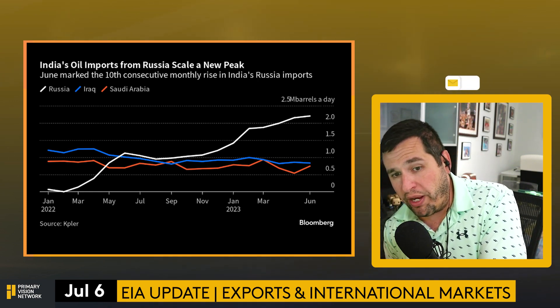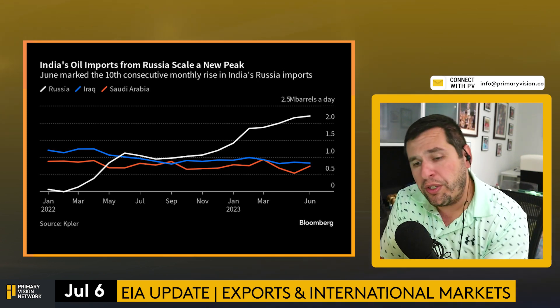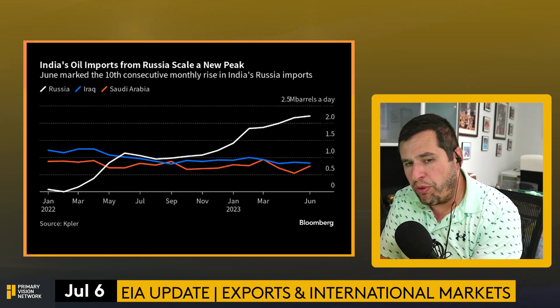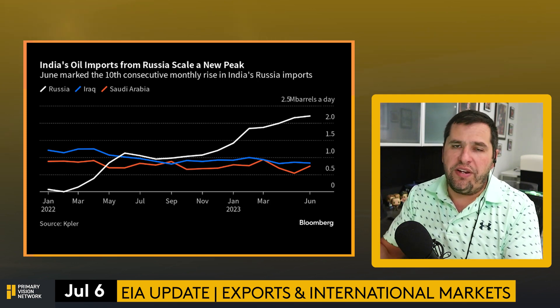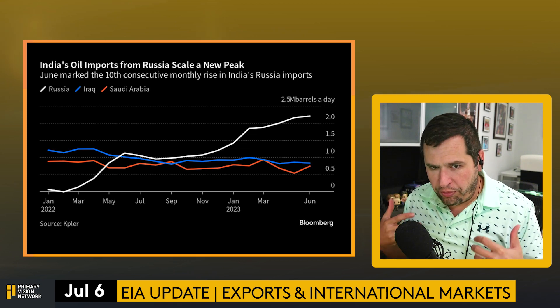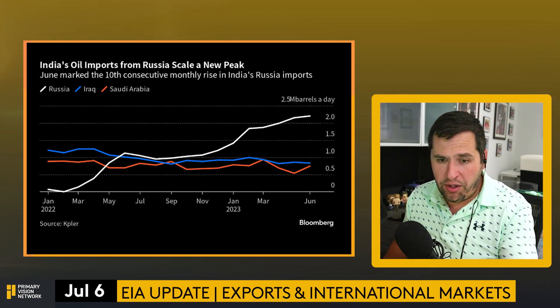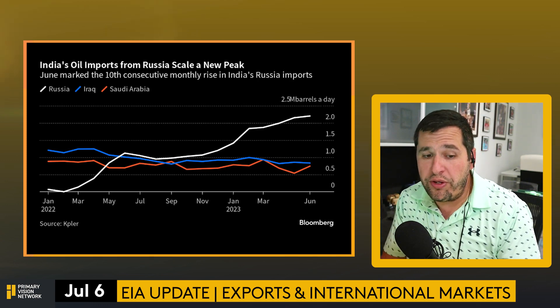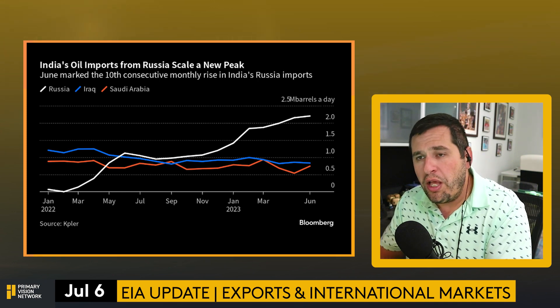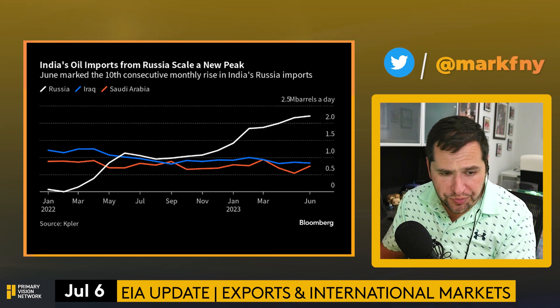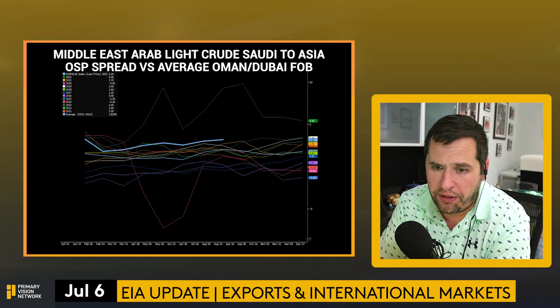India will continue importing more Russian crude. By doing that, they're leaving Saudi and Iraqi crude on the water. Instead of letting it sit, Saudi is leaving it in the ground, while Iraq — which has seen some of this come down — actually benefits the US because those Iraqi barrels, especially Basra Heavy and Basra Medium, are ones the US will pay a premium for, given how short we are on the heavy and medium sour side.